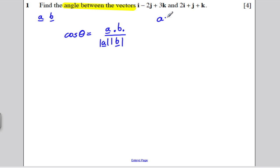Let's define A to be I minus 2J plus 3K. Let's define vector B to be 2I plus 1J plus 1K. Defining vectors like that, it just means all your notation is much easier.